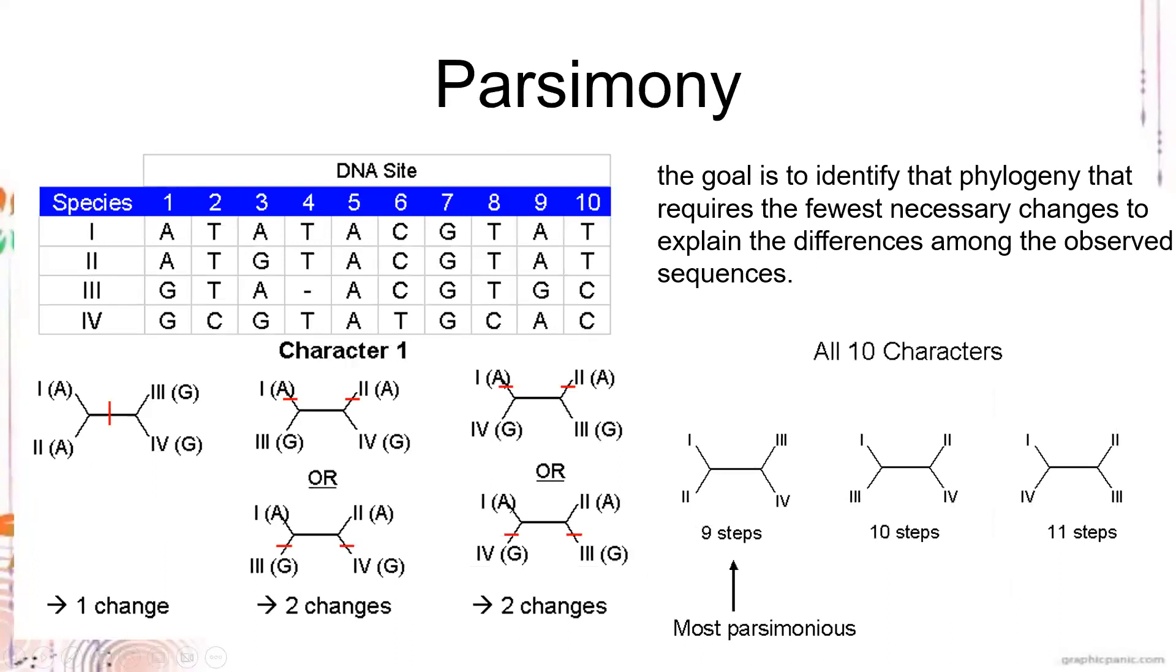Another method for creating a tree is parsimony. In parsimony, the goal is to identify the phylogeny that requires the fewest necessary changes to explain the differences among observed sequences. For example, you have this same sequence. In here, you are going to look at them character by character.